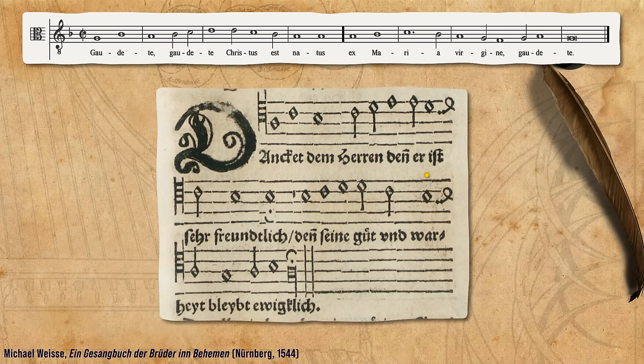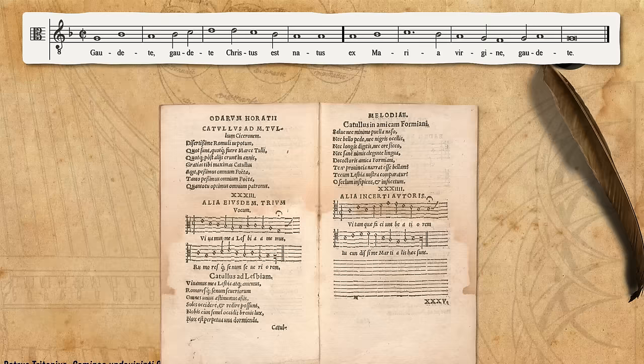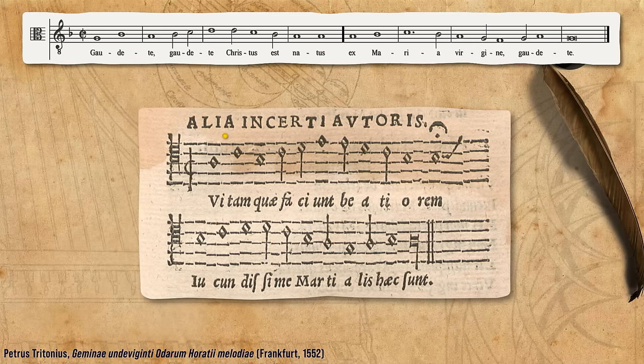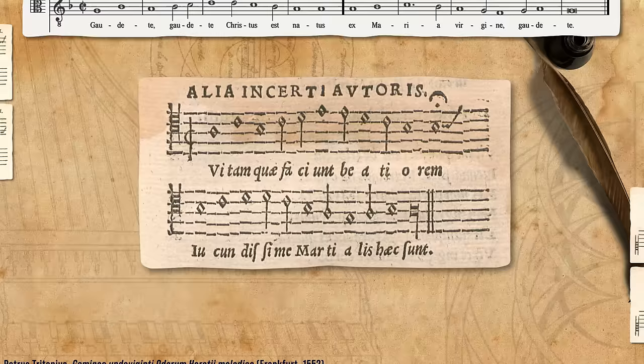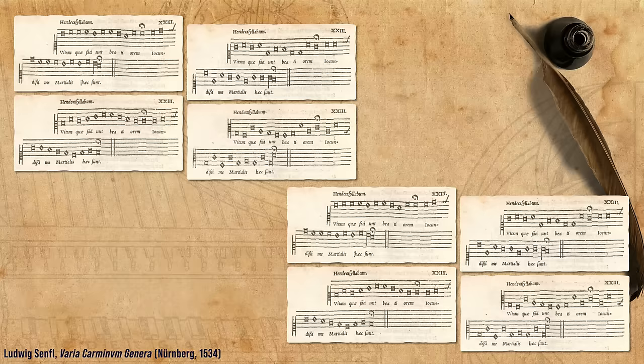It is notated in A, one note higher than the way it is notated in the Piae Cantiones. The melody is found in yet another source from Germany, but this time in Latin. There are also two polyphonic settings of this melody from 1534, by the Swiss composer Ludwig Senfl. These are quite special.